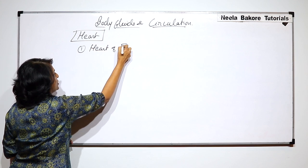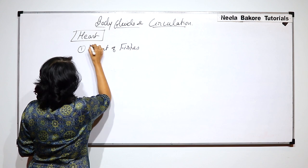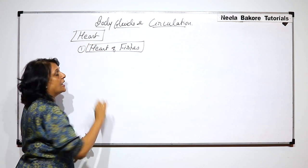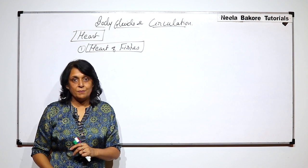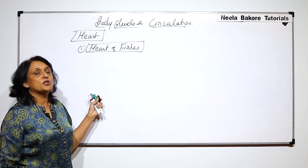Heart of fishes. Then we will say amphibians, reptiles, birds, and mammals. Heart of fishes, reptiles, birds, and then mammals, we have human heart. So, how is fish heart?